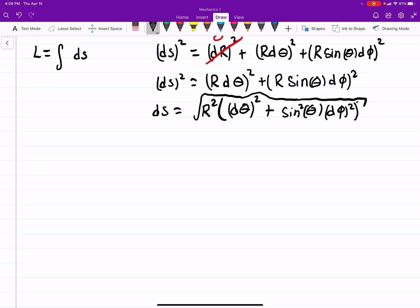And obviously the r squared can come out. And then I'm going to do something that looks kind of weird, and I'm going to factor out, and I'll make this a little bigger. I'm going to factor out a d theta squared. And if I do that,